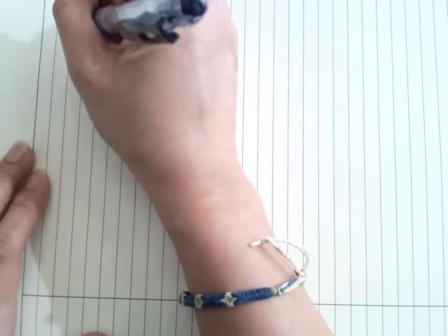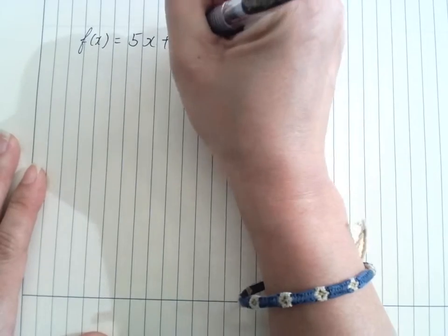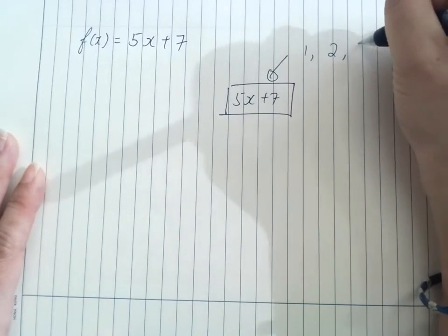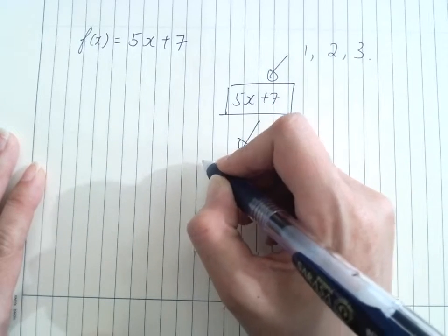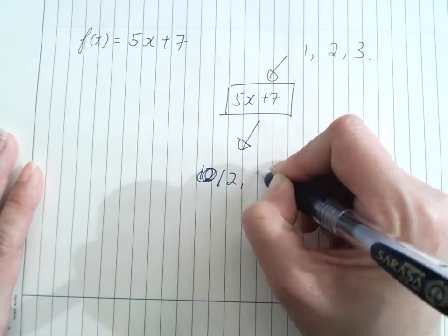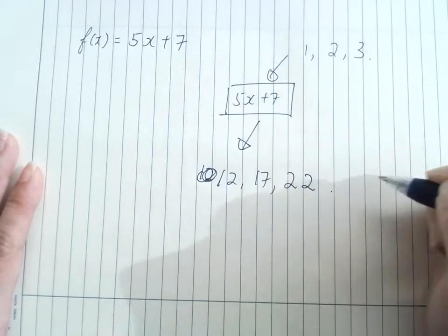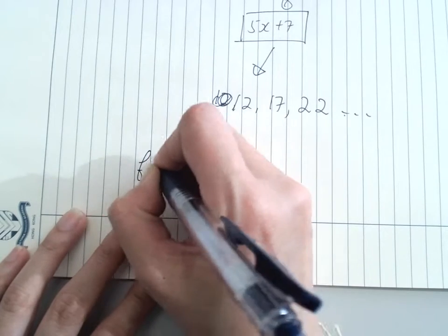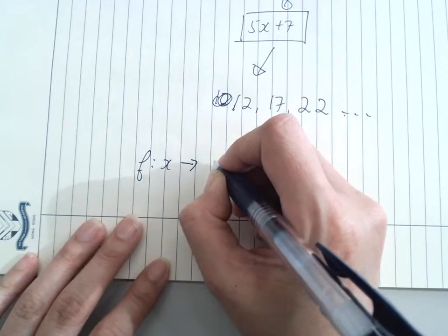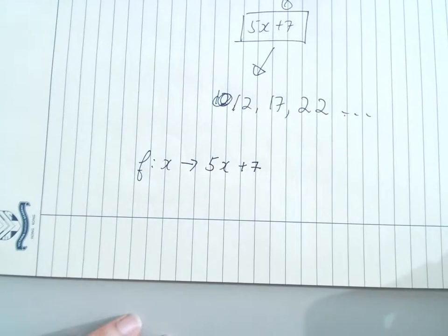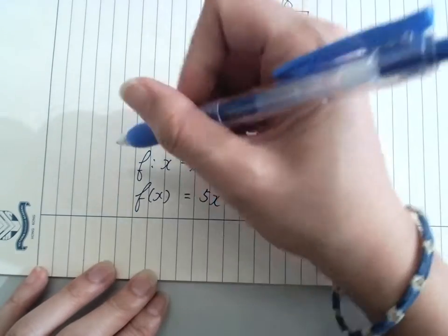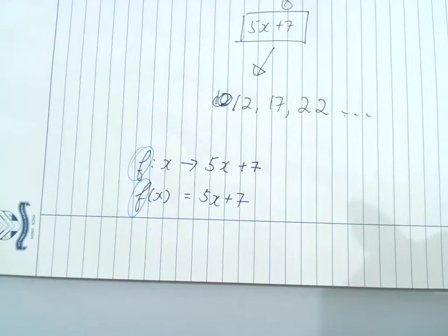There are different notations of functions. In general, we have f(x) equals 5x plus 7. Just like when we were young with function machines, we input different numbers and output different numbers. To make it look professional, they write it as function of x, given the function is 5x plus 7, but they actually mean the same thing. Remember, f is just the name of the function - it could be g, h, or anything.